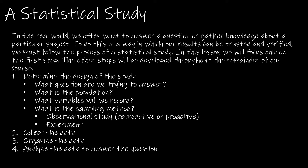There are four steps. The first step is to determine the design of the study — what question are we trying to answer, why are we doing the study, what is the population, who is it that we are going to be studying. Remember, the 'who' does not have to be a person; it can be an animal or an inanimate object. Then, what variables will we record, and what is the sampling method — that's the 'how'. In this video we'll look at the first three questions. The sampling method is split into two videos: observational studies in 1.3.2 and experiments in 1.3.3.